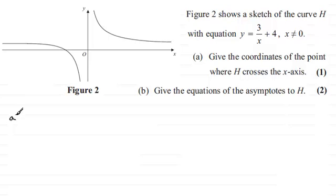Well, for the first part, part a, we've got to find out where the curve H crosses the x-axis. Well, it clearly crosses at this point here. And at this point, the y-coordinate would be 0. So all we've got to say then is when y equals 0, that means we've got 3 over x plus 4. 3 over x plus 4 must equal 0.